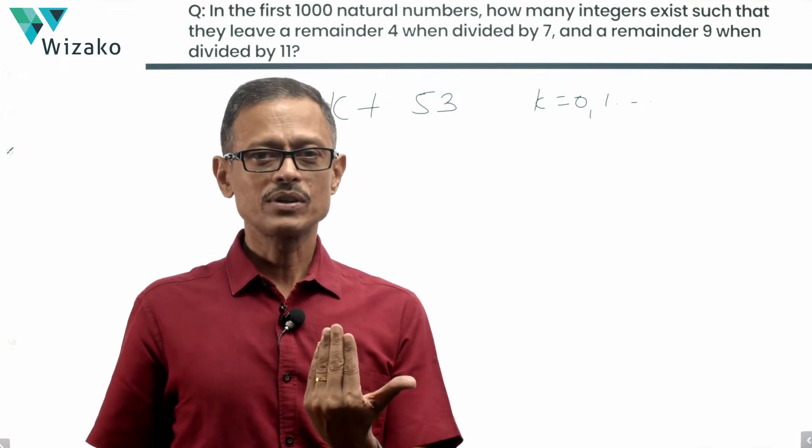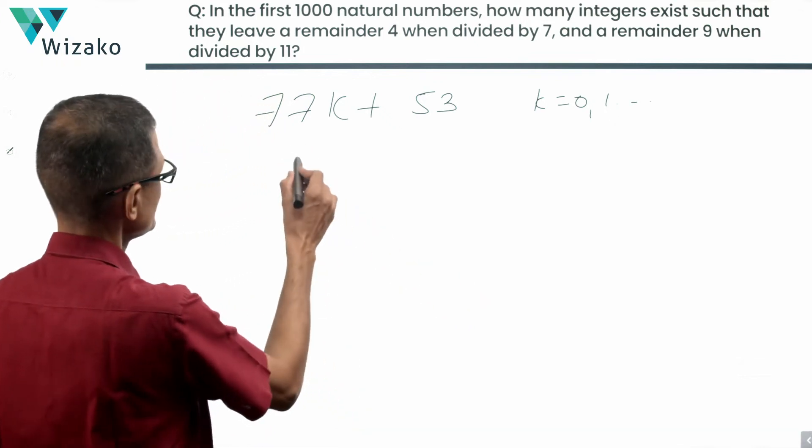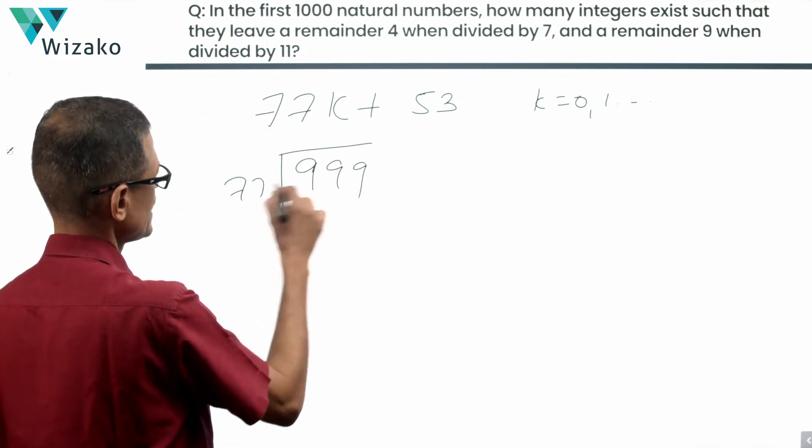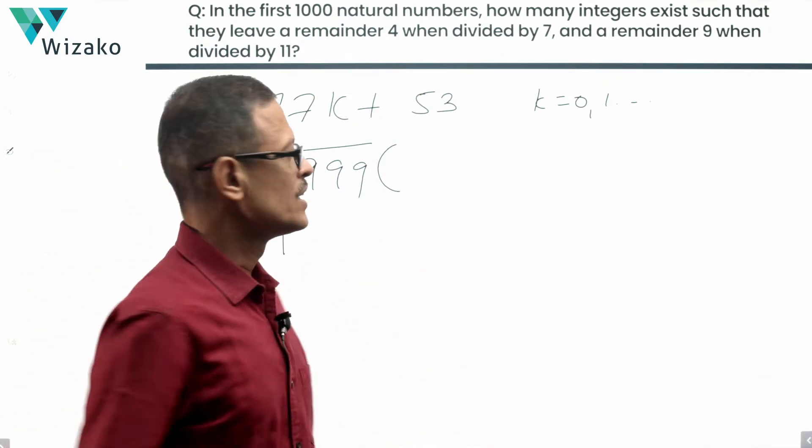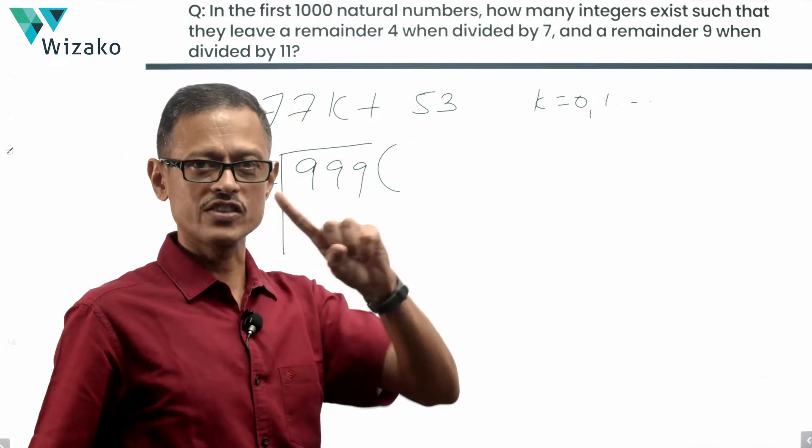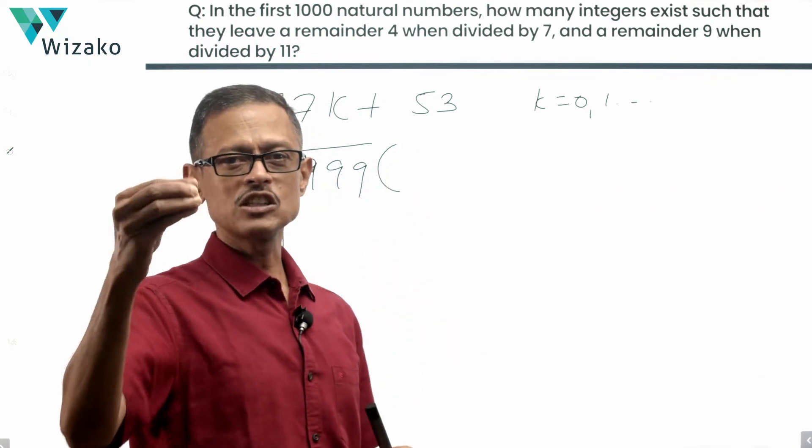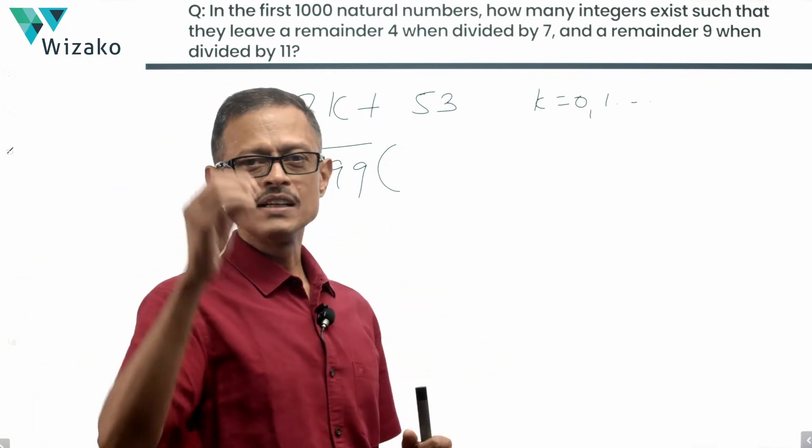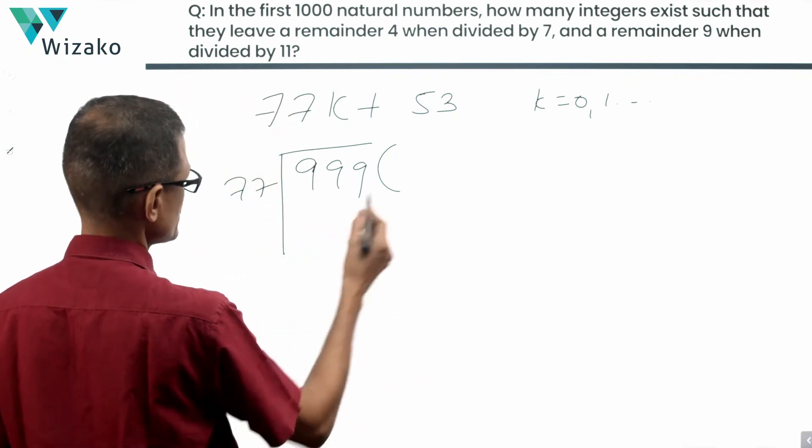Next thing to find out is when will the last term appear? Easiest way to go about it. 999 is the largest three digit positive integer. Divide it by 77 and then let's see what remainder we get. And then we can deduce from there something. So we're starting with the 0th multiple of 77 plus 53. That's our first term. We'll see what is the last multiple. If it ended up being, let's say the 11th multiple, 0 to 11 will be 12 terms. If it ended up being the 14th multiple, 0 to 14 will be 15 terms. That's where we are going to end. 999 by 77.